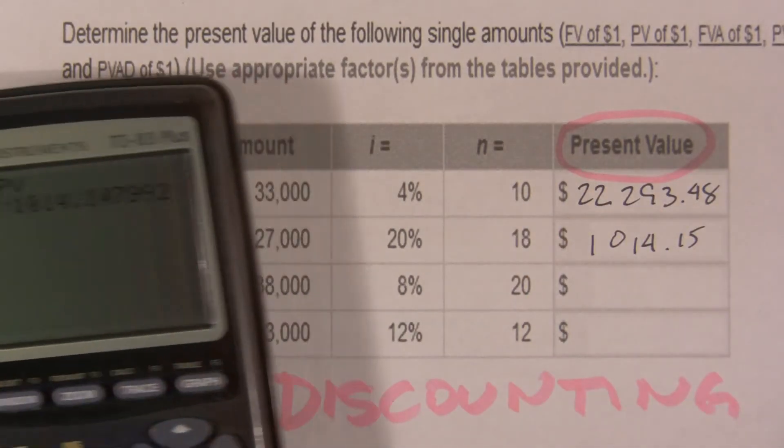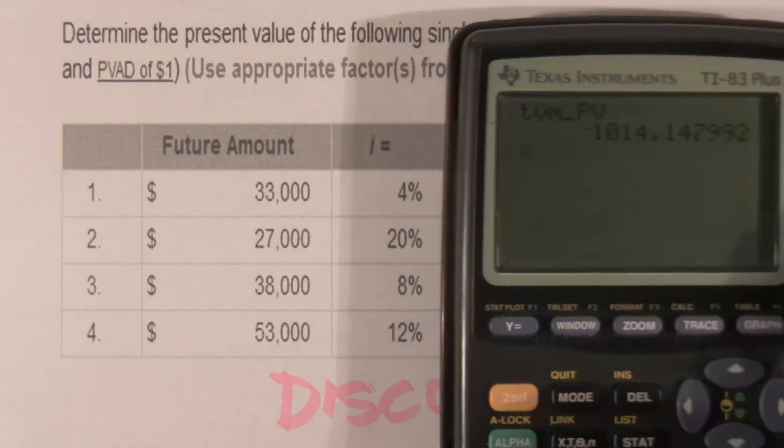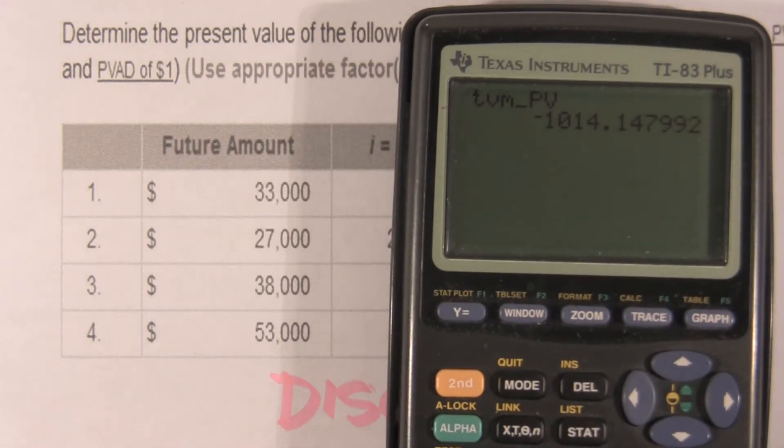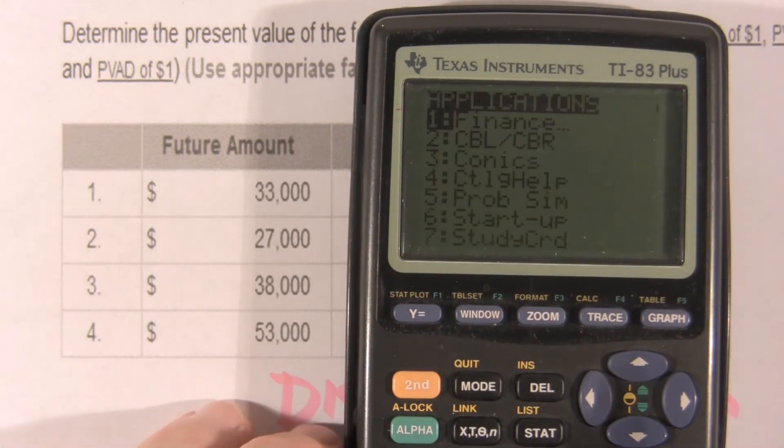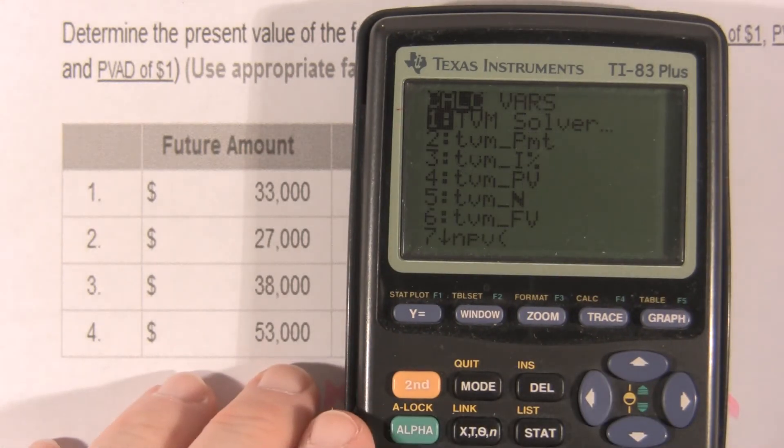This will always be less. So, let's do the next one. We'll start by clearing. And, apps, finance, time value of money solver.